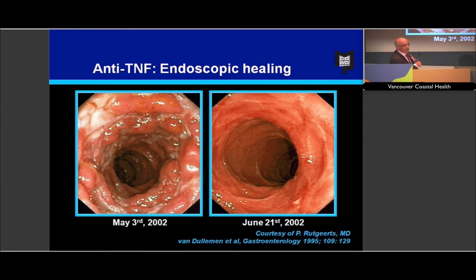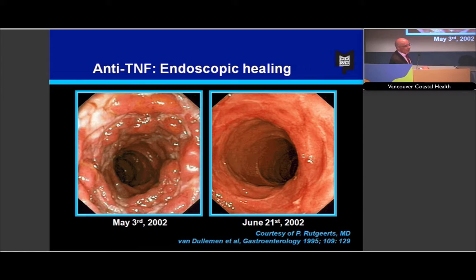This is an example of what we never saw before with anti-TNF agents. On the left is a pretty nasty looking bowel with big, deep, serpiginous ulcers. After a couple of doses — from May 3rd to June 21st — this is from a notable center in Leuven, Belgium, who did a lot of the pioneering work — it looks much improved. This was quite a shift in terms of how we manage these diseases.